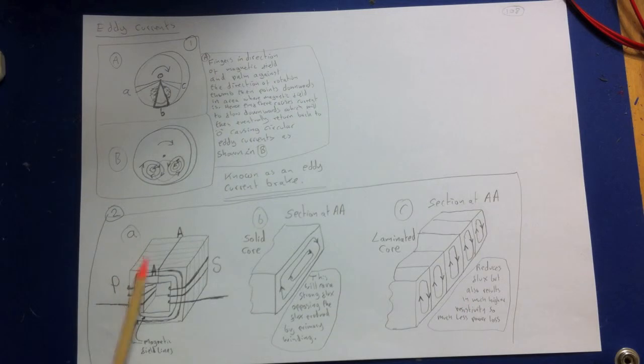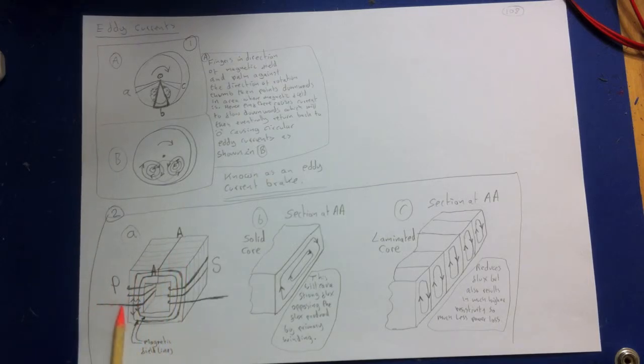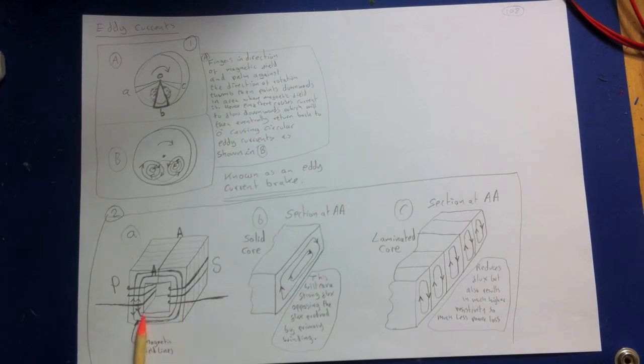As a second example of eddy currents, consider the core of an alternating current transformer shown. So we've got this transformer, there's the primary winding, there's the secondary winding. I've drawn in a couple of magnetic field lines. Now, this is AC, so the current is changing direction all the time, so the magnetic flux is going to also change direction.